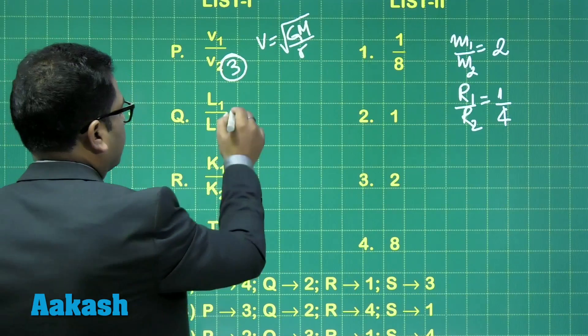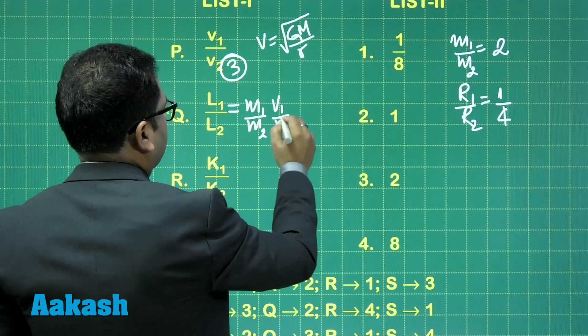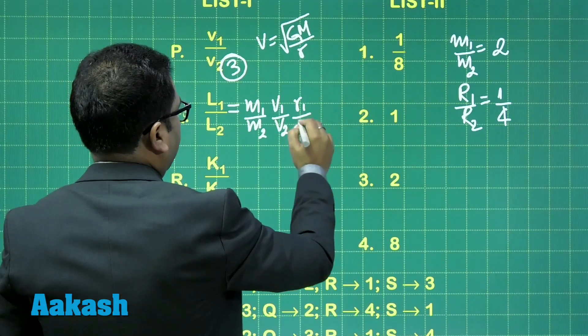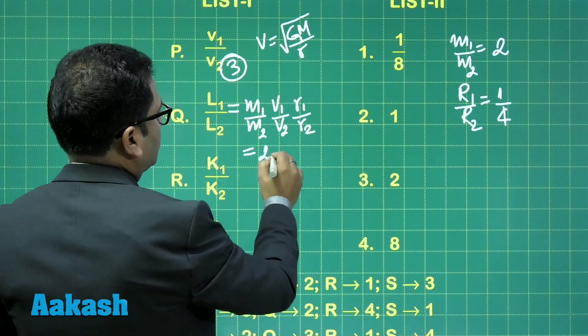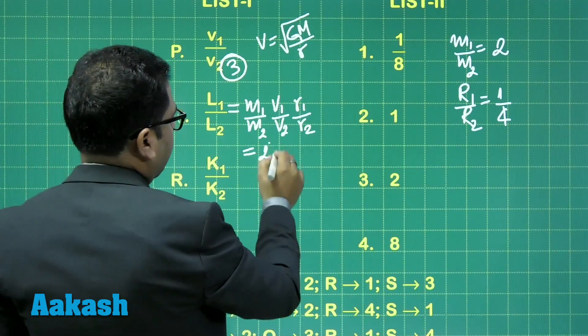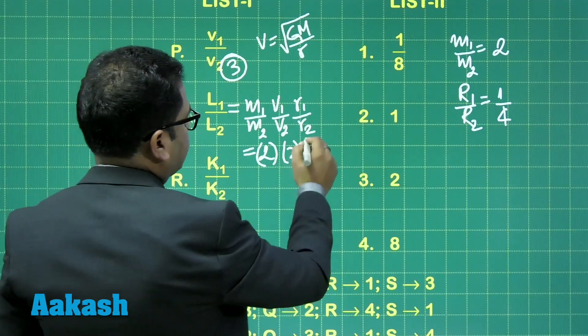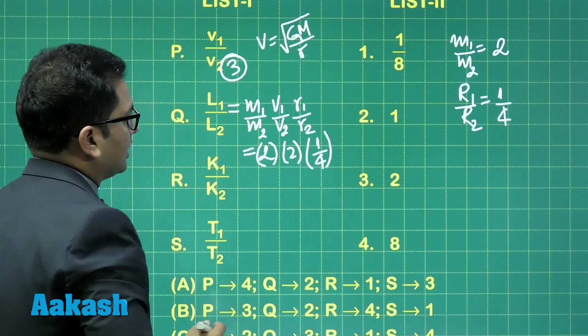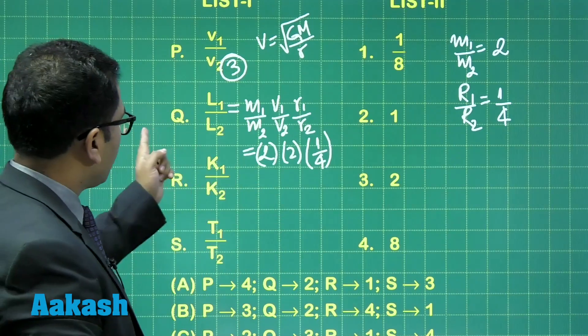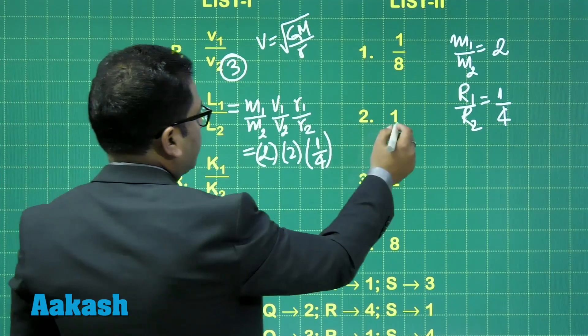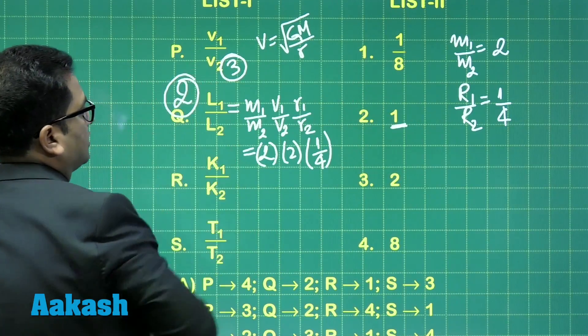Next, L1/L2 = (M1/M2) × (V1/V2) × (R1/R2) = 2 × 2 × 1/4 = 1. So for Q, the ratio is 1, which is option 2.